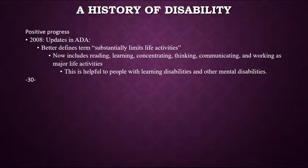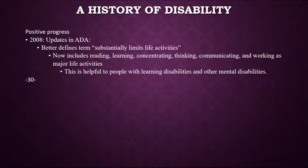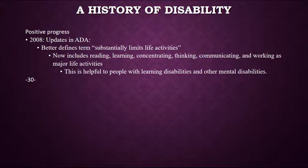In 2008, the ADA was updated. It was slightly imperfect the way it was passed in the 1990s — it wasn't super clear as to what 'substantially limits life activities' meant. It was expanded to include life activities such as reading, learning, the ability to concentrate, the ability to think, the ability to communicate, and the ability to work. What that effectively did was shift the early ADA — which was really geared toward physical disabilities — to make mental disabilities a greater part of it. Things like ADHD and other learning disabilities became plugged into the kinds of things accommodations could be granted for.